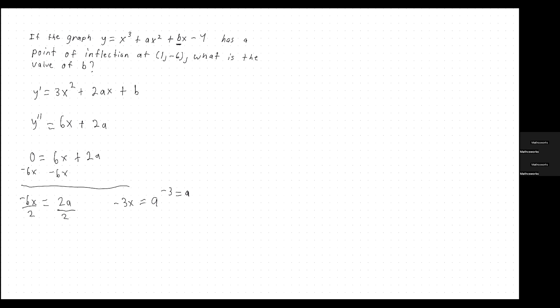So from here, we would have to plug it into the original equation. So again, since we're given the y value of the point of inflection is negative 6, we would set the entire initial function x cubed plus ax squared plus bx minus 4 and set that to equal negative 6. So let's do that.